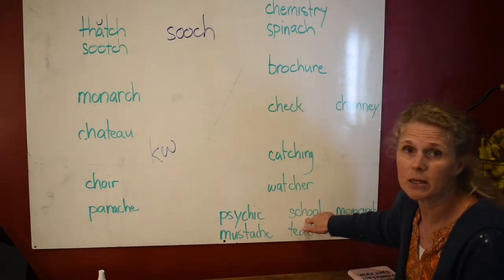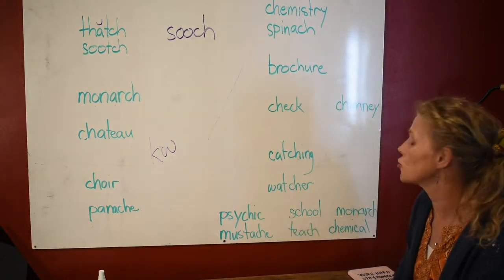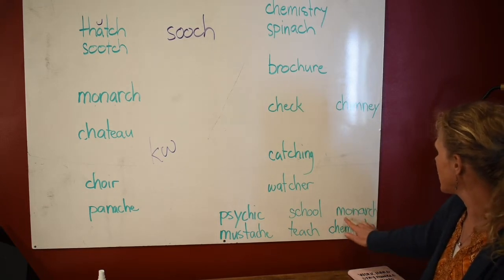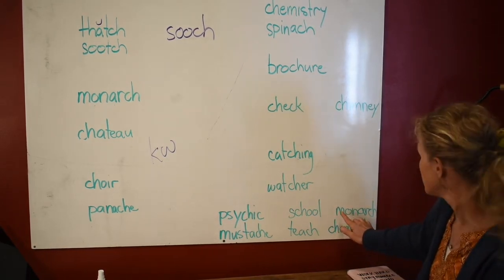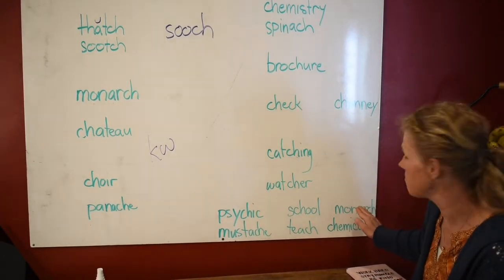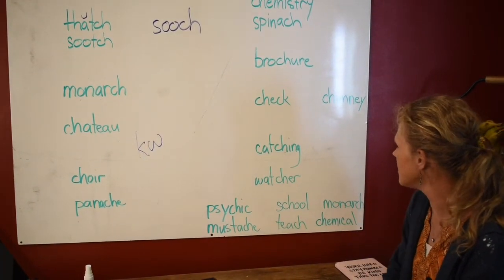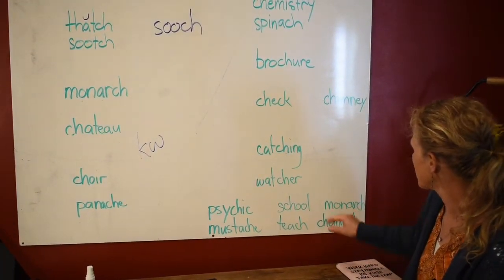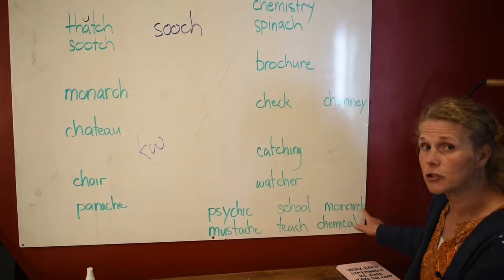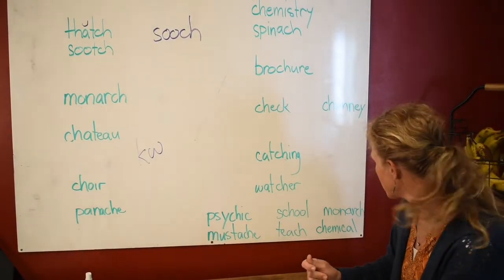Now look at SCH — immediately you know this is a Greek word. You don't even have to guess. So this will say 'school.' Now I have 'monarch' up here again, because this is such an important word. 'Mon' and 'arch' — these are both Greek combining forms and they're important to know. If you've studied your Greek combining forms, you would look at that and immediately know that is a Greek word.